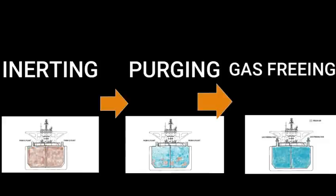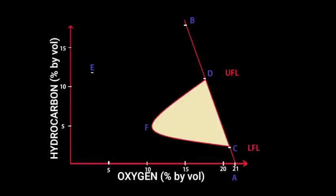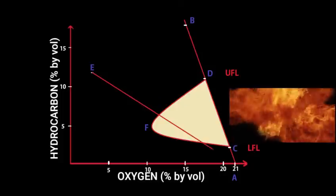As you would remember, the process of manned entry begins with inerting, followed by purging, and then gas-freeing. If we introduce air after inerting, that is, if air is introduced from point E itself, it passes through the flammable mixture, therefore possessing a fire hazard.